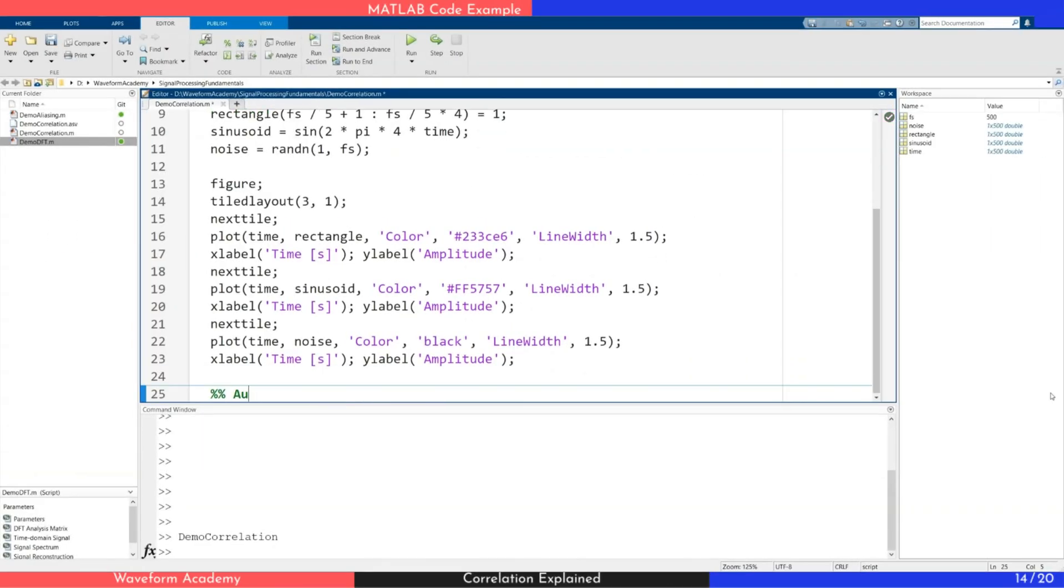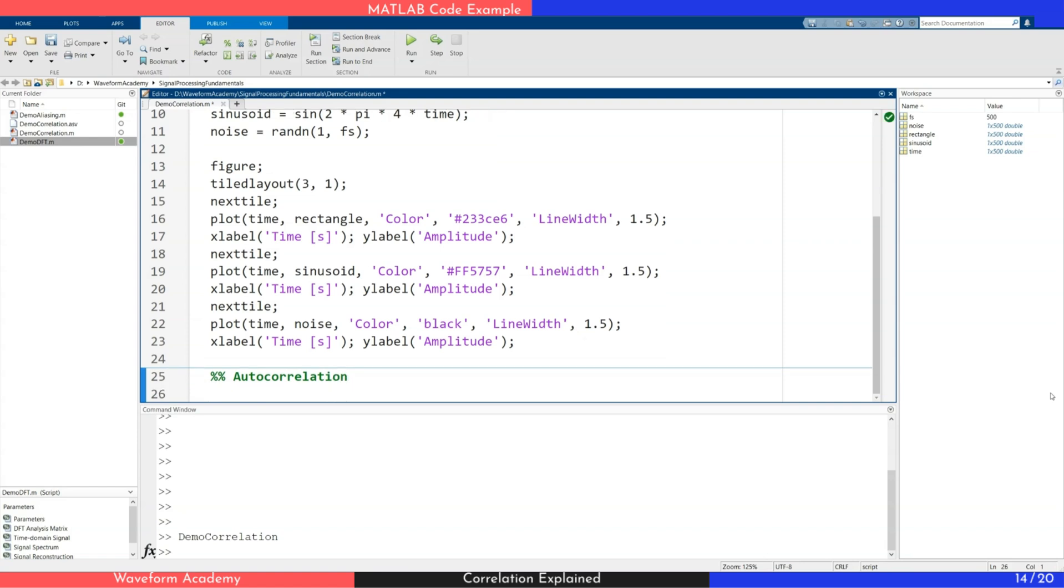Next, we calculate the autocorrelation of each signal. We begin with the rectangular pulse. For this, we use MATLAB's xcorr function.